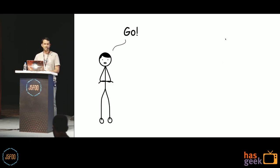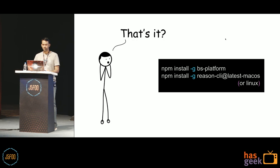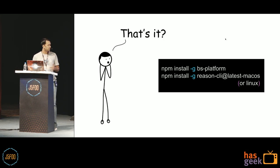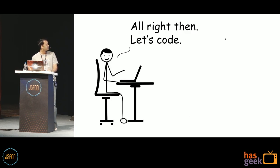How hard is it to get started? Well, I can safely assume that most of you are JavaScript developers, which means you probably have Node installed. Which means there are only two steps: you install the platform, and then you install the Reason CLI for your particular platform. And assuming you have VS Code installed — which is very likely — there is a plugin that gives you excellent editor integration. So that really is it. Let's look at some code.